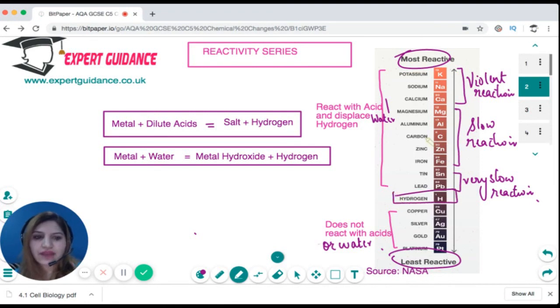Now whenever we react metal with dilute acids, the metal is actually displacing the hydrogen. So all the metals which are above hydrogen in the reactivity series will react with dilute acids and they form salt and hydrogen. Similarly with water, all the metals which are above hydrogen will react to form metal hydroxides and hydrogen.